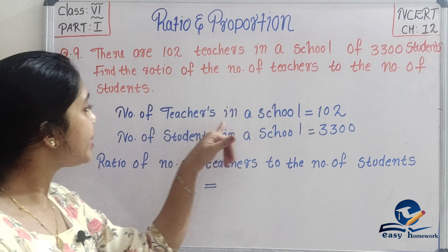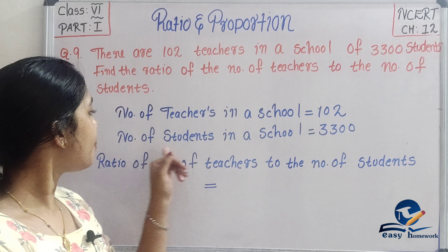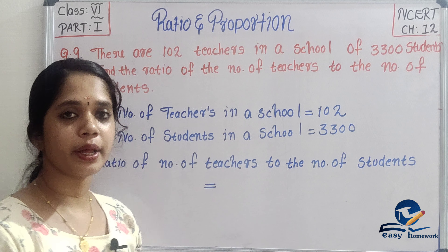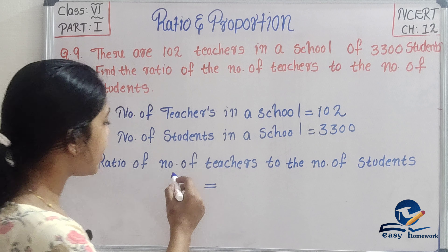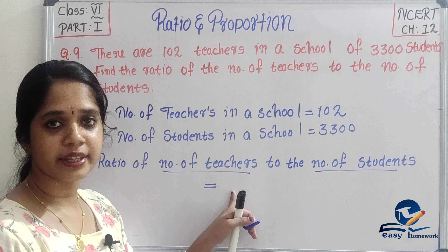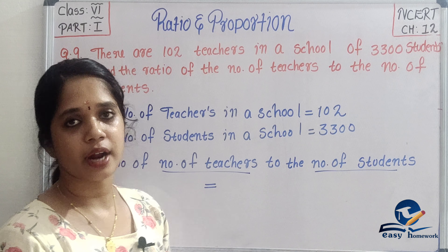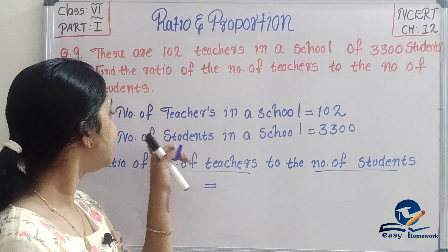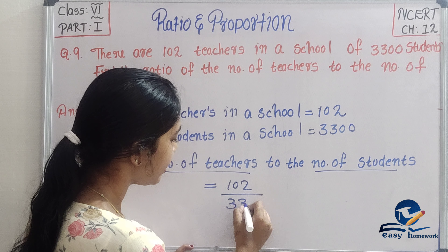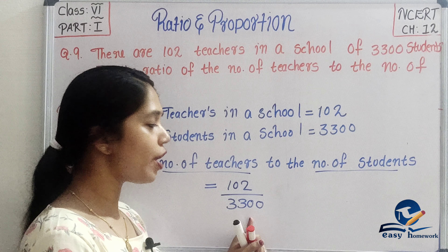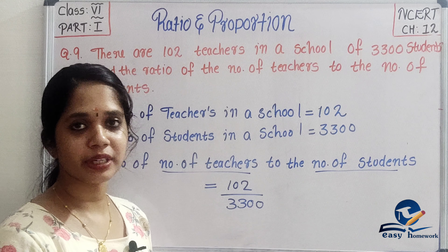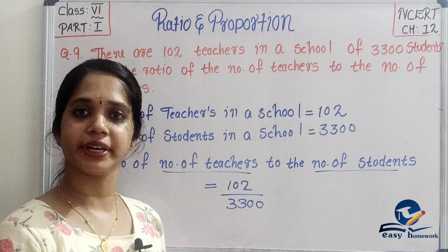Now question 9. The number of teachers in school is equal to 102. The number of students in school is equal to 3,300. If we find the ratio of number of teachers to number of students, we divide 102 by 3,300. Since both numbers are even, we can divide by 2.